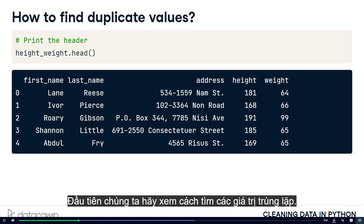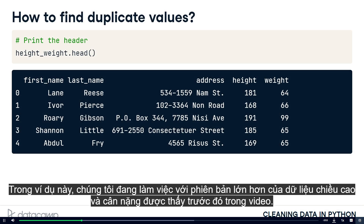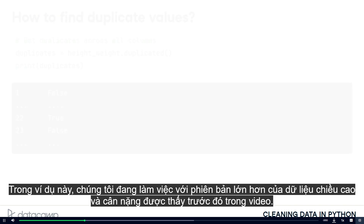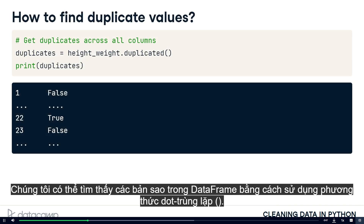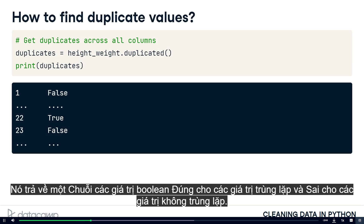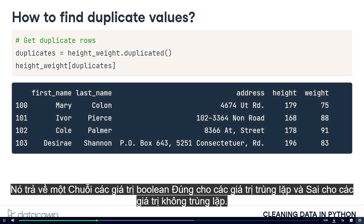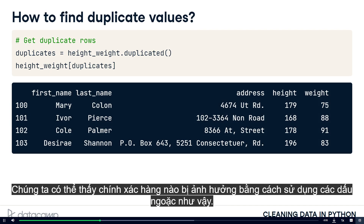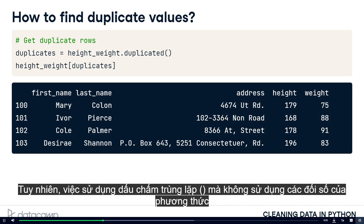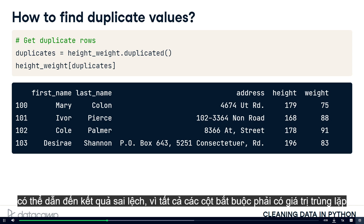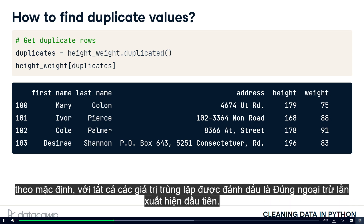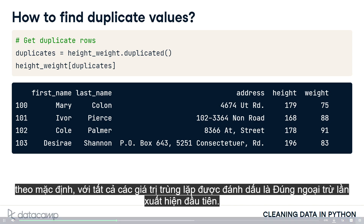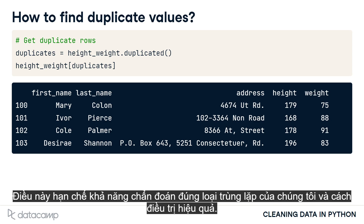Let's first see how to find duplicate values. In this example, we're working with a bigger version of the height and weight data seen earlier in the video. We can find duplicates in a dataframe by using the .duplicated() method. It returns a series of Boolean values that are true for duplicate values and false for non-duplicated values. We can see exactly which rows are affected by using brackets. However, using .duplicated() without adjusting the arguments can lead to misleading results, as all columns are required to have duplicate values by default, with all duplicate values being marked as true except for the first occurrence. This limits our ability to properly diagnose what type of duplication we have and how to effectively treat it.